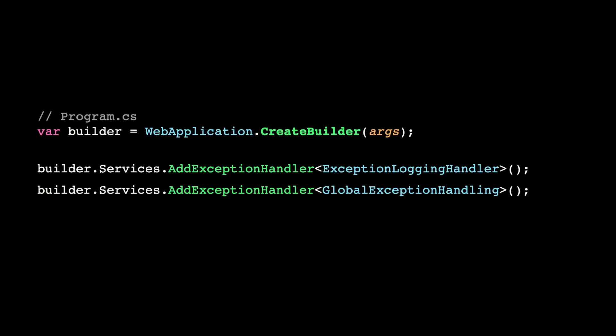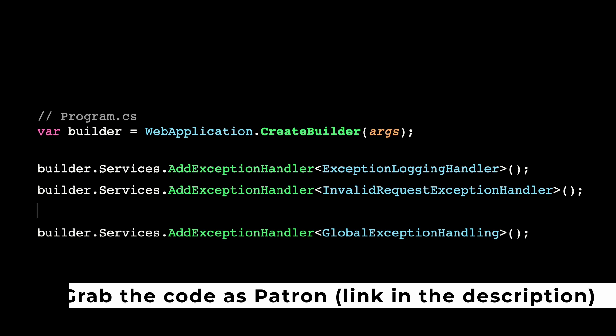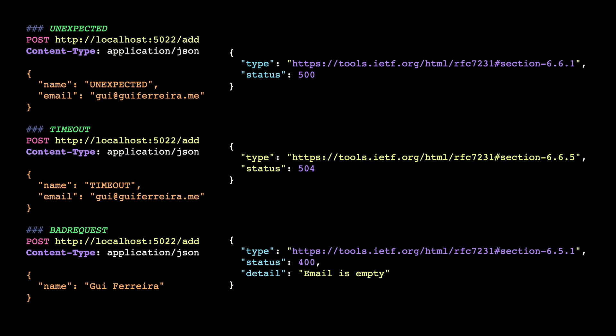Now we can convert the existing global exception handler into a kind of catch-all exception handler. We don't need to check exception types — we just reply with a 500 response. Now, one last thing: let's go back into the program.cs, update the registration, and add the new ones before the catch-all. And now, my friends, with just a few lines of code, we have the responses we want.